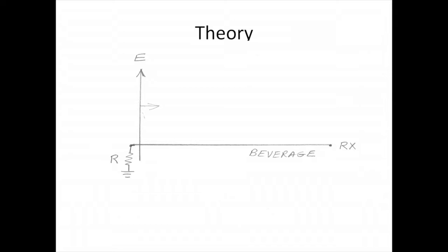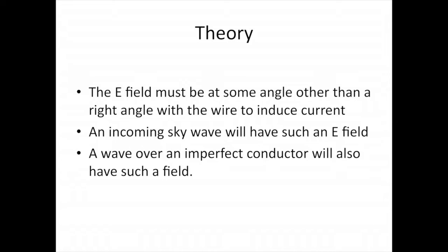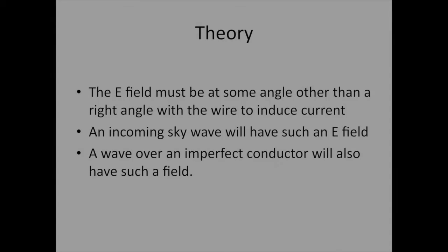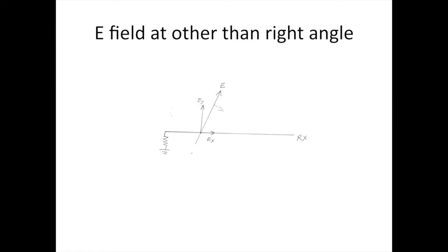Now this diagram shows an E field perpendicular, at right angles, to the receiving antenna. So if a signal was coming down the wire with the E field perpendicular to the wire, you would never hear anything. However, the E field must be at some angle other than a right angle with the wire to induce current. An incoming sky wave will have such an E field, and a wave over an imperfect conductor such as real ground will also have such a field. Now this shows an E field at other than a right angle, and you will see there is a vertical and a tangential component to the E field. This E field is slanted, slanted forward as it goes down sweeping the beverage antenna wire.